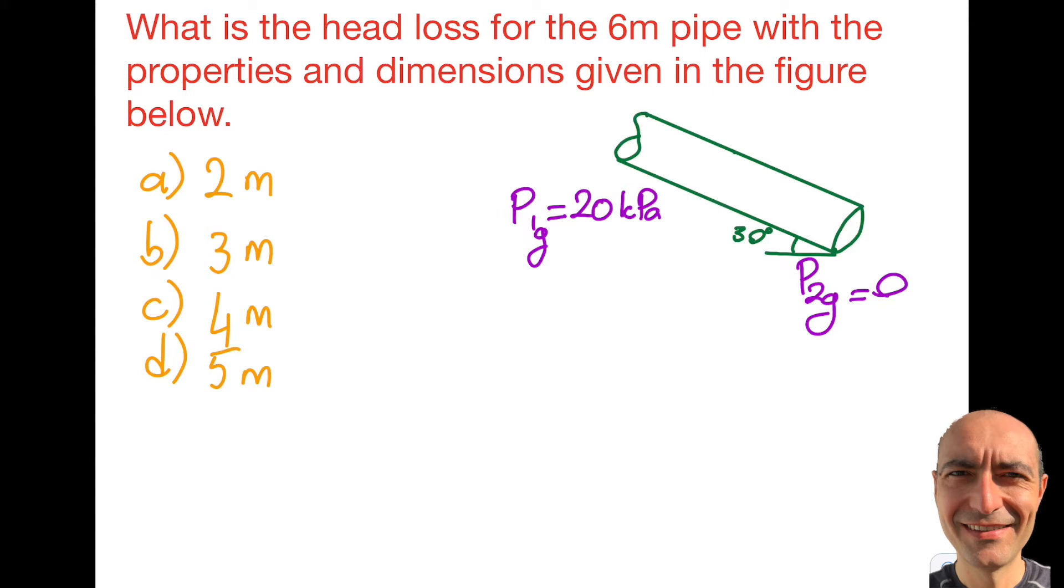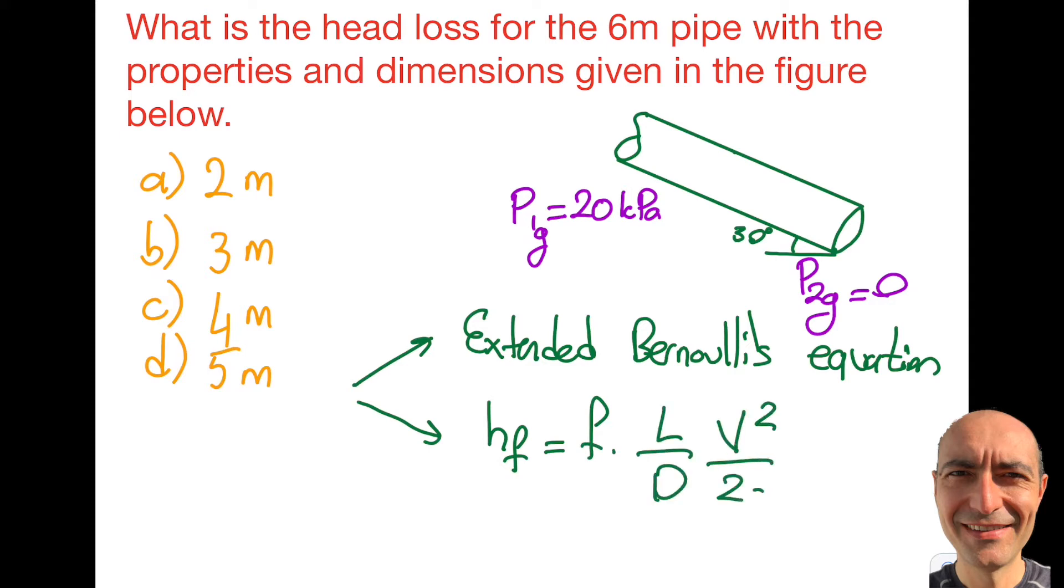Now in this kind of questions we have two options. I want to talk about these options so you can judge which one to use and this question is using one of the approaches. The first approach is using the extended Bernoulli's equation and this equation is given in the reference manual to you. And the second approach is basically there's a definition for hf which is the head loss. It's going to be f l over d v square over 2g.